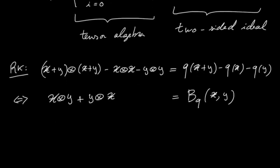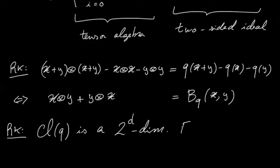So the Clifford algebra, as defined above, is 2 to the d dimensional F algebra, and one may check the following.